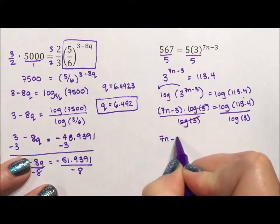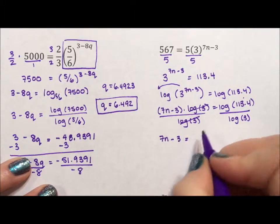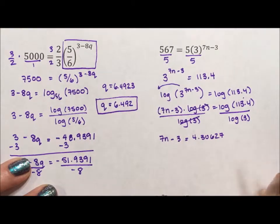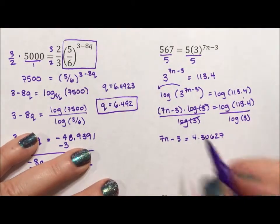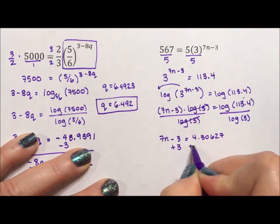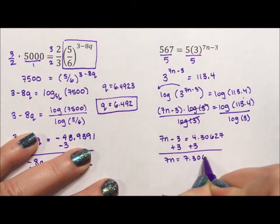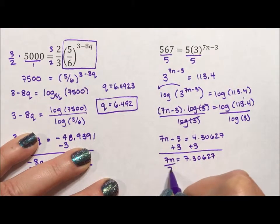All right so 7n minus 3 is going to equal 4.30627. Again I'm rounding to three decimal places but I'm going to go out further. I'm going to add three to both sides so that 7n is equal to 7.30627. Divide by seven.